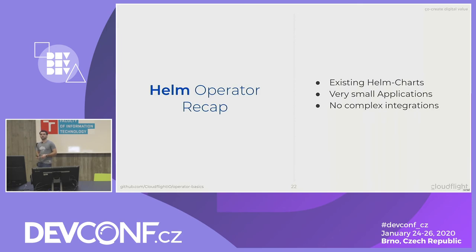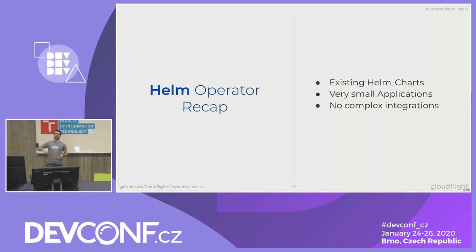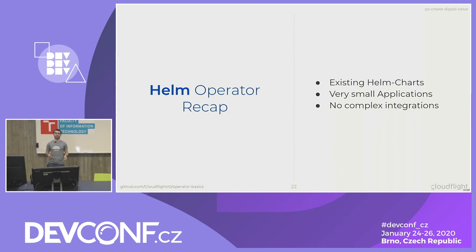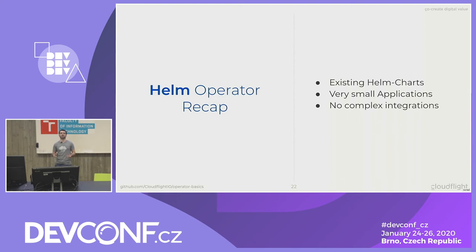To recap the Helm operator: it's best suited for existing Helm charts, and if your organization is already working with Helm it should be simple to get started. It's best suited for small applications — you can't perform advanced lifecycle operations like clustering a Redis instance, which would require custom logic to ensure the right count of sentinels and master nodes. And you don't have the capability to perform complex integration with external systems since it's all Helm-based.